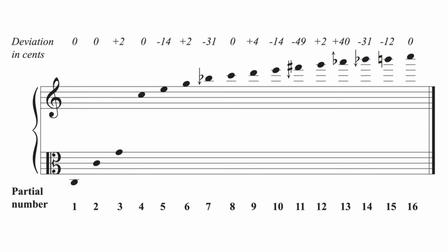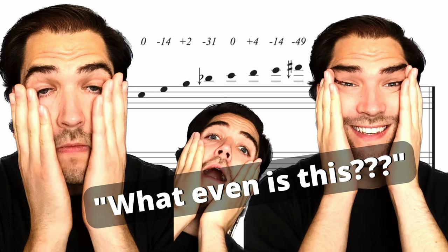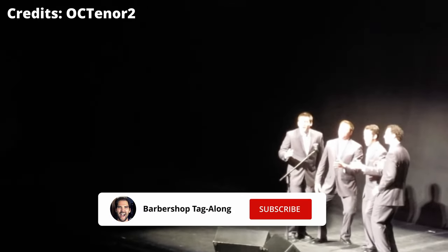In previous episodes, we've looked at the overtone series, which shows us how overtones naturally occur when we sing. But it's still incredibly complicated to explain and show exactly what overtones does to our voice and our sound. Many of you have probably heard this crazy overtone from a performance by The Vagrants.